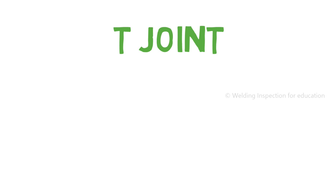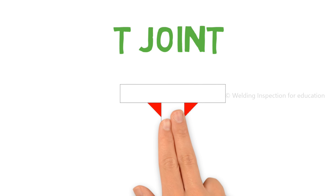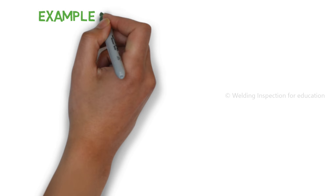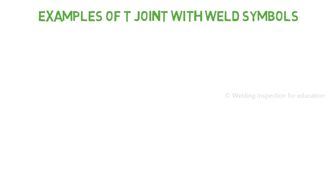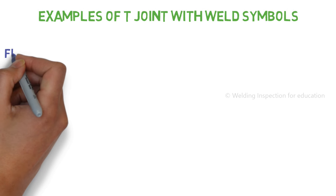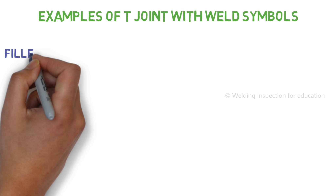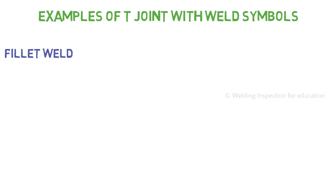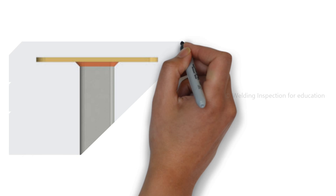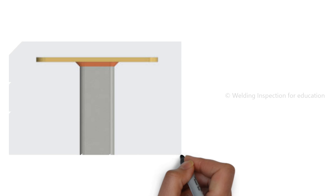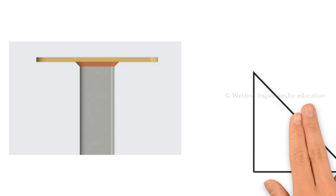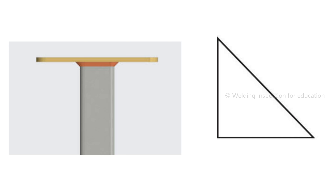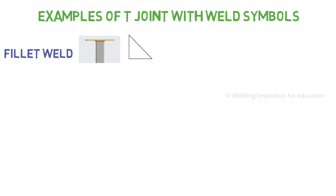Now let's see some examples of T joint with weld symbols. First, fillet weld: in a fillet weld T joint, one flat surface makes a 90-degree connection with another flat surface. Make sure they are both touching each other, and that connection is available to weld on both sides.